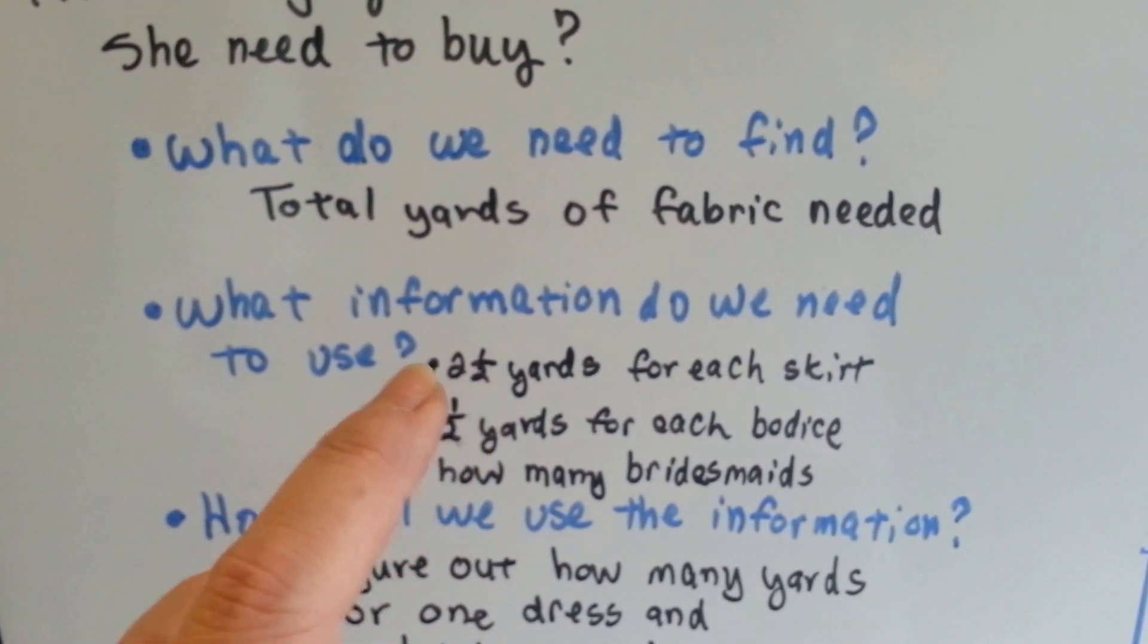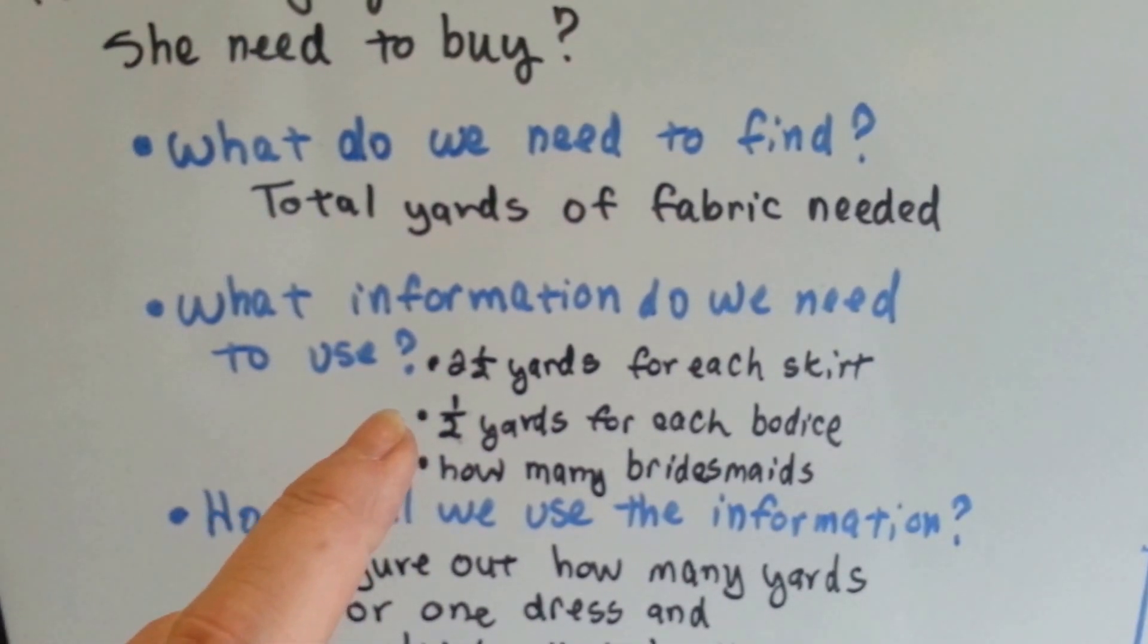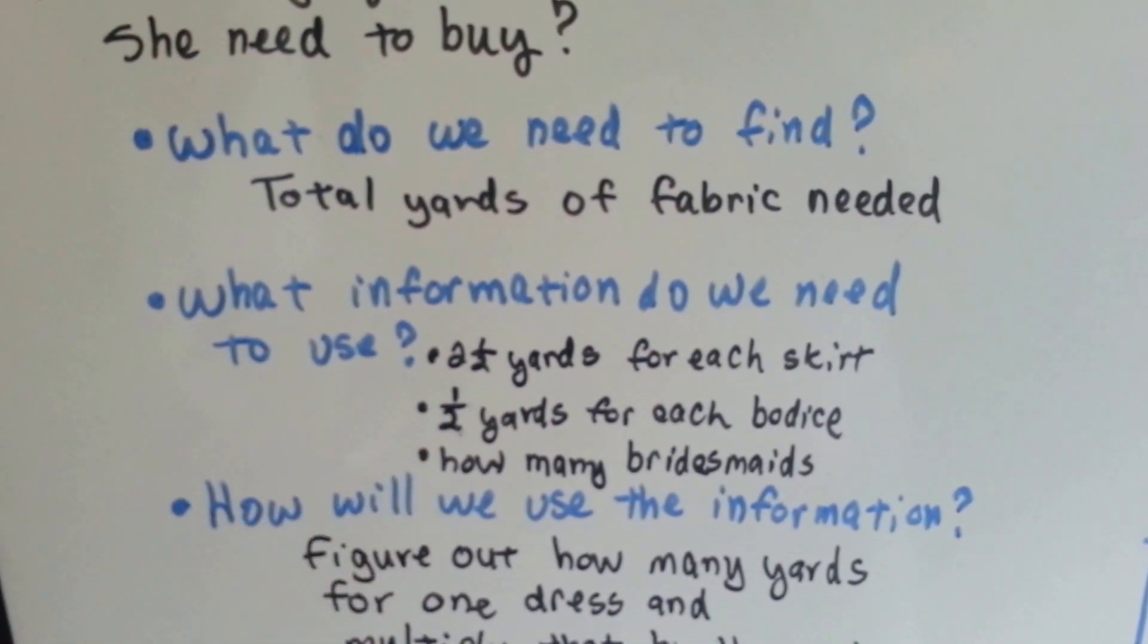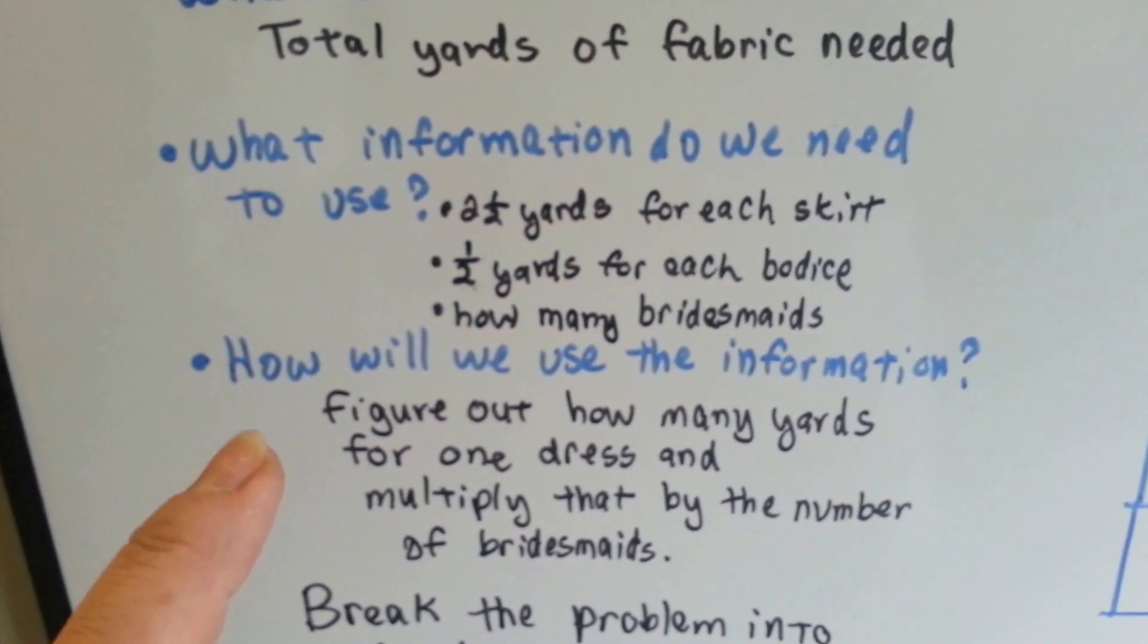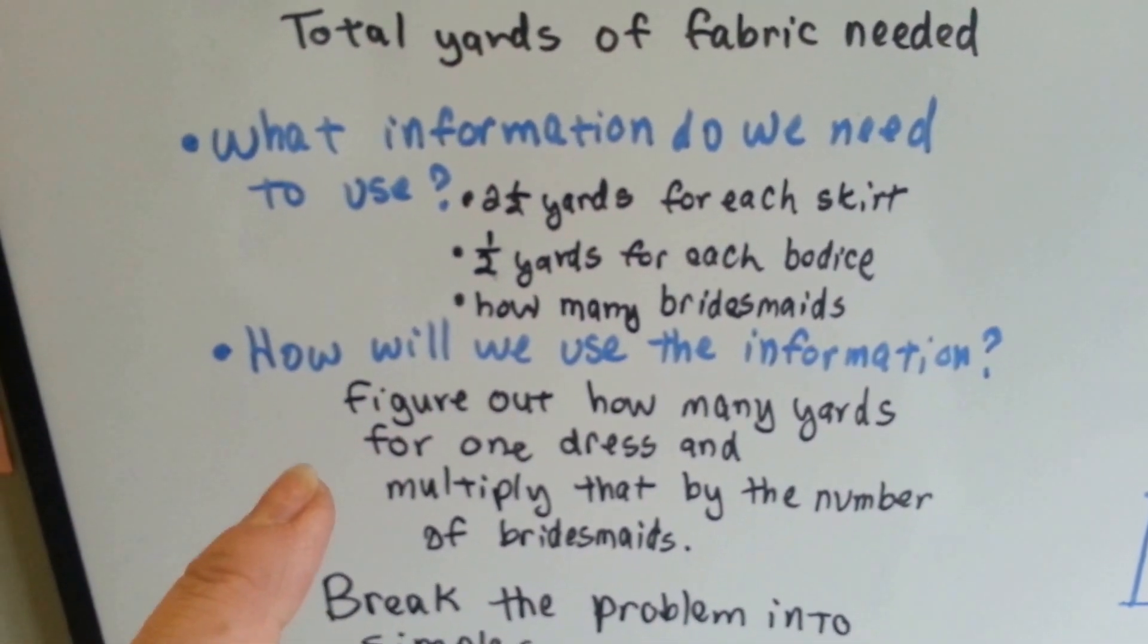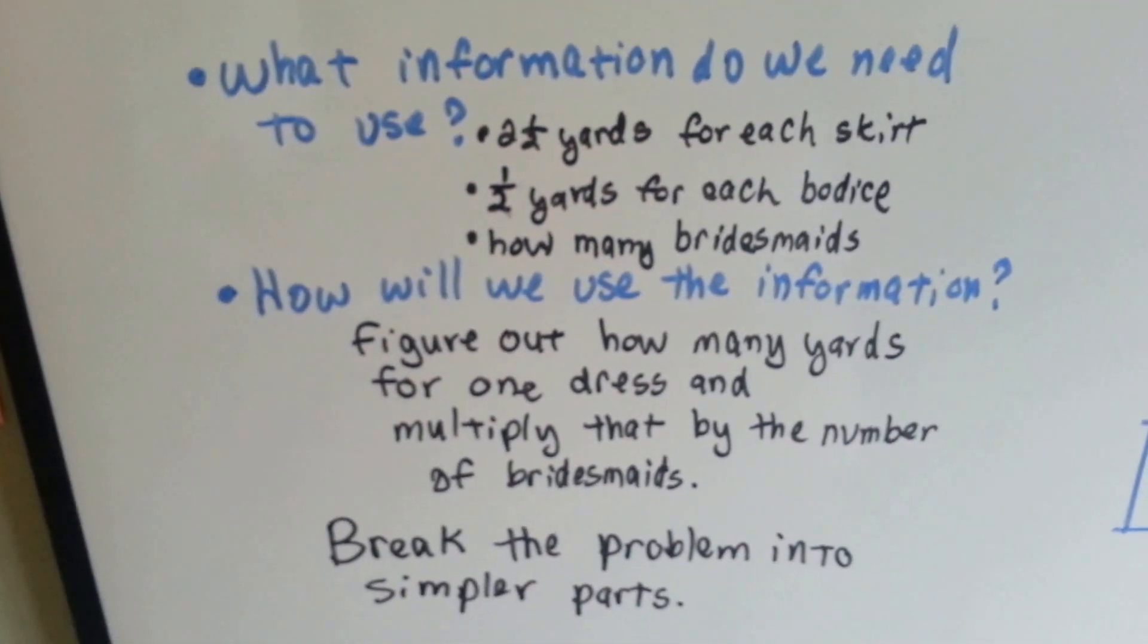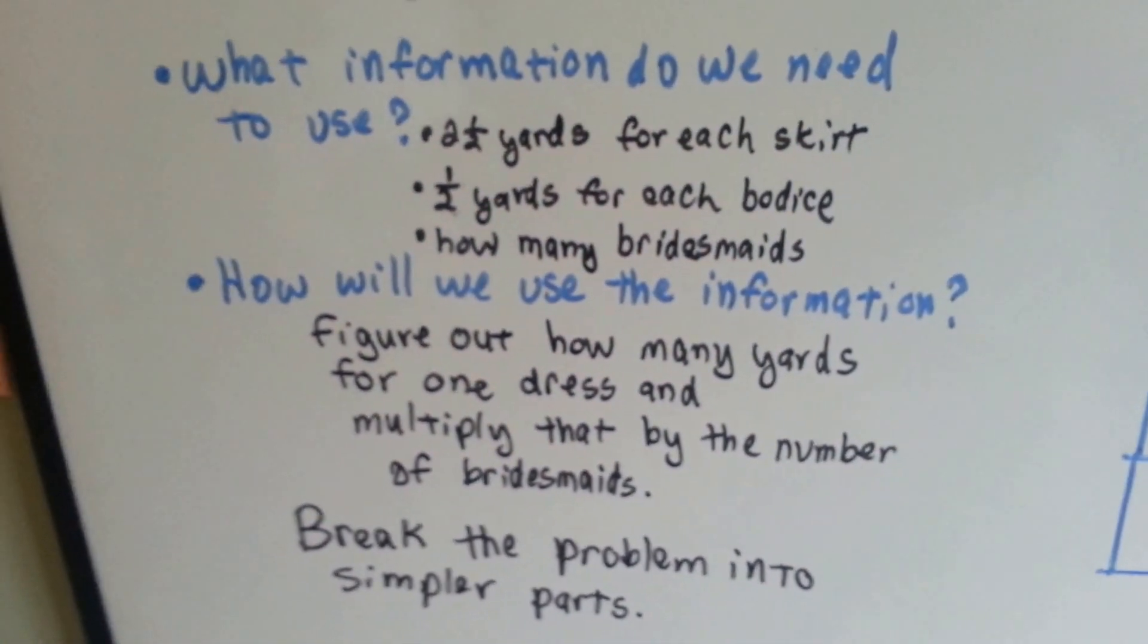What information do we need to use? Well, that she needs two and a half yards for the skirt part and a half a yard for each bodice and how many bridesmaids there are. How will we use the information? We'll figure out how many yards for one dress and multiply that by the number of bridesmaids. We're going to break the problem into simpler parts.